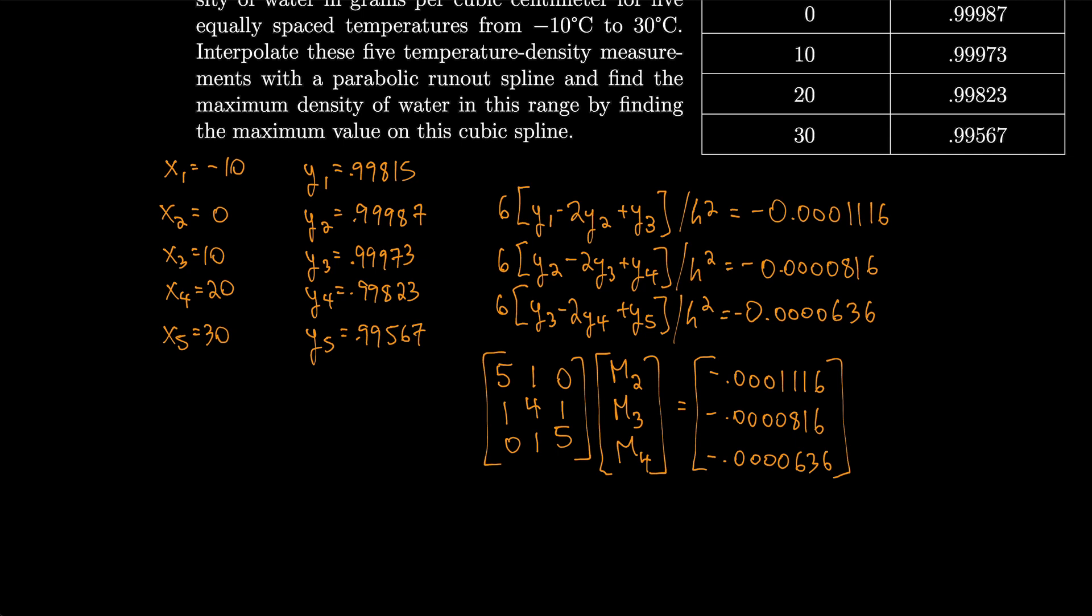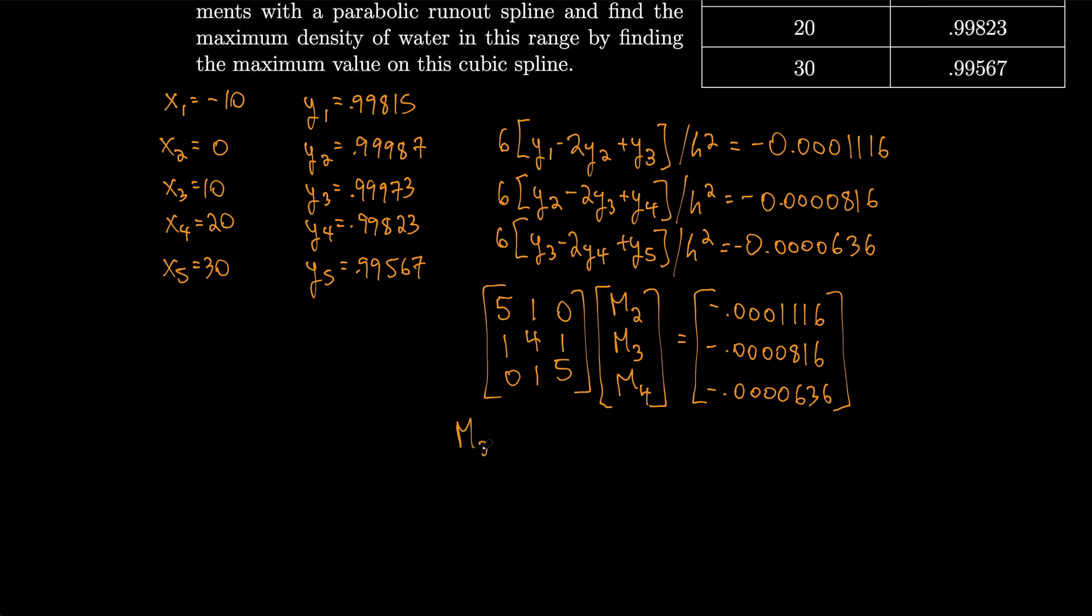So then we can solve this matrix. I'll use a calculator and get m2 is equal to -0.0000197, m3 is equal to -0.000129, and m4 is -0.000101. Then, because this is parabolic, we have m1 equal to m2, so that's -0.000197, and m5 has to be equal to m4, so that's -0.000101.